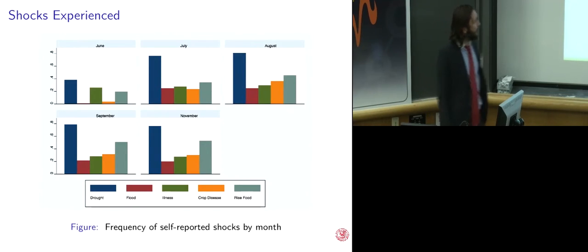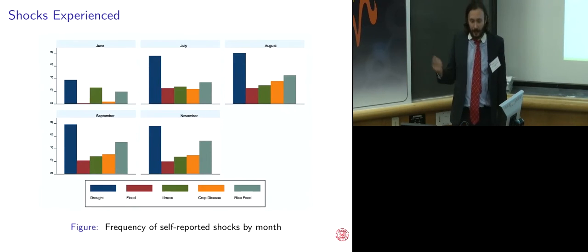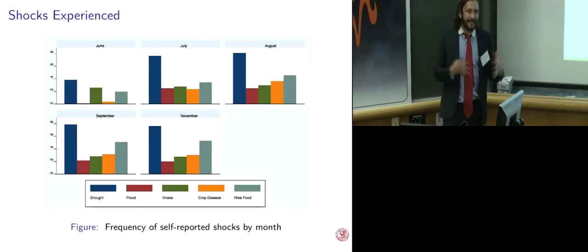But we also see a host of other shocks. And interestingly, these shocks are interrelated. For example, if you experience drought, you're also much more likely to experience a rise in food prices. If you experience flooding, you're more likely to experience illness because of waterborne illnesses like cholera. So again, we see how this is not linear, this is not simple. There are these interlocking dynamics that have to be accounted for.